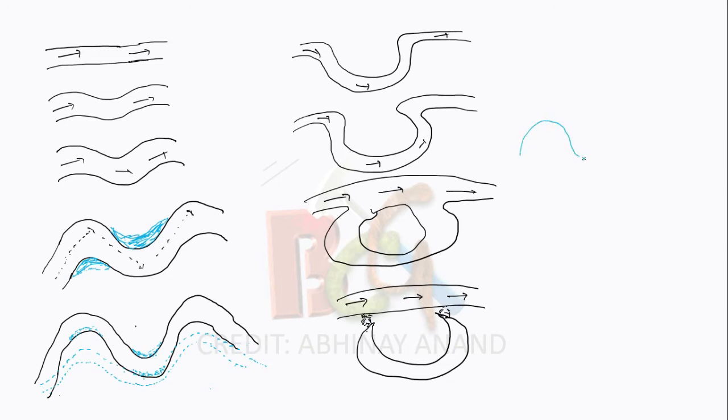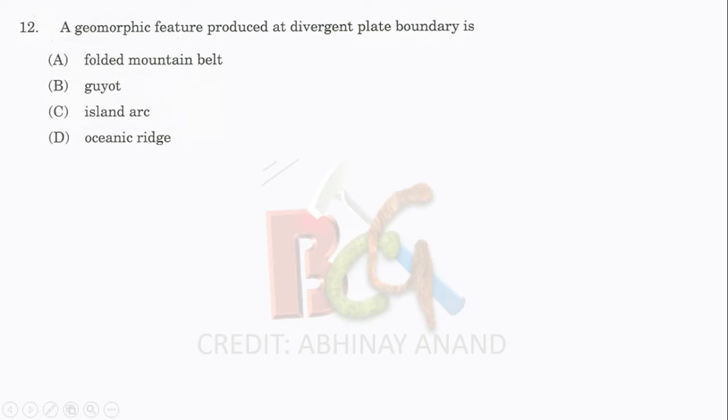Now, to understand meander river banks correctly: some people confuse whether this part is convex or concave. Focus on the same point - this part is convex and this part is concave. Here you can see clearly which side is which.